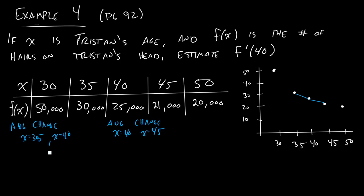So in this problem, the way this is going to work is we look at difference in outputs divided by difference in inputs. So we'll look at 25,000 minus 30,000. So the hair on his head at 40 minus the hair on his head at 35, and we'll divide that by 40 minus 35. And if you calculate this out, this is equal to negative 1,000 hairs per year.